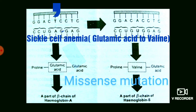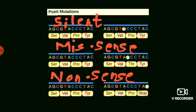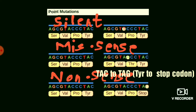The next type is the nonsense mutation. As the name itself indicates, in this mutation a substitution of a nitrogen base converts a functional codon into a stop codon — also called the termination codon. As you can see in this picture, at the DNA level it is TAC, and in the mRNA level it changes to TAG, which is a stop codon. The termination codon is introduced in the middle of the functional sequence and causes premature termination of the polypeptide chain synthesis.